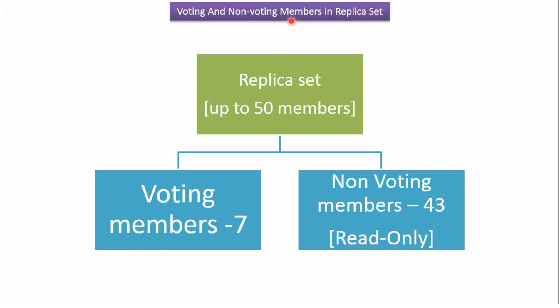This video tutorial will explain voting and non-voting members in a replica set in MongoDB. In a replica set, up to 50 members can be there — 7 members are voting members and 43 members are non-voting members.